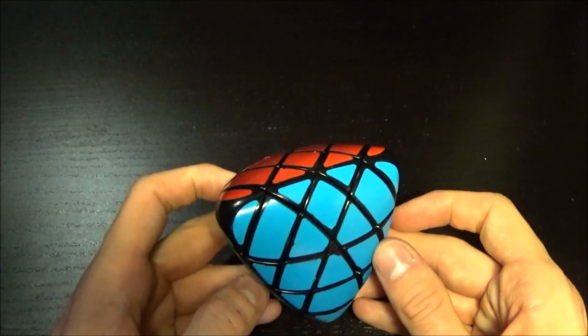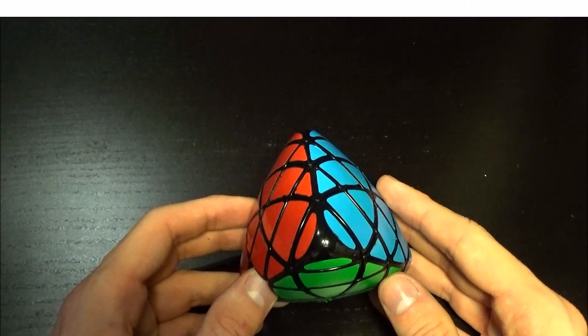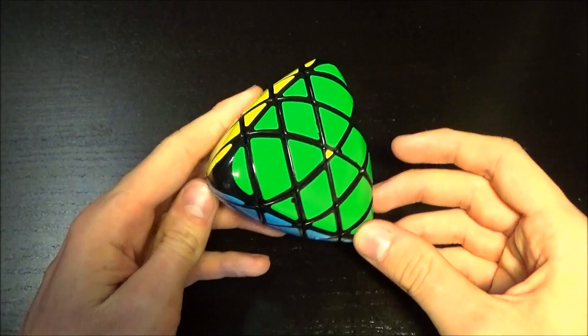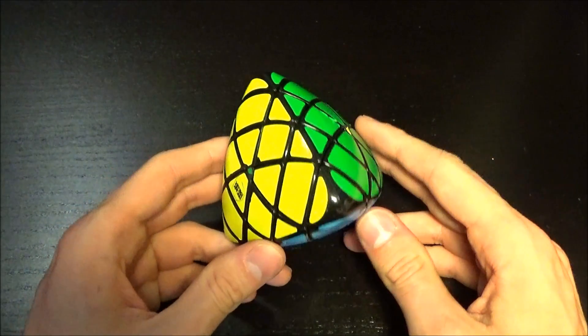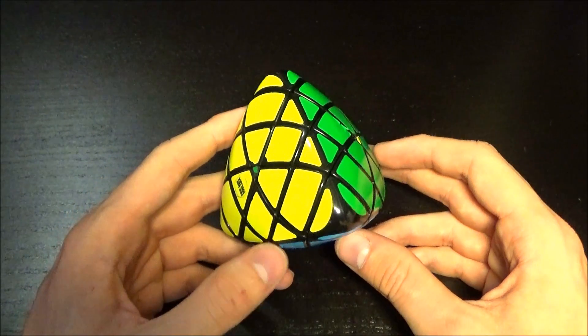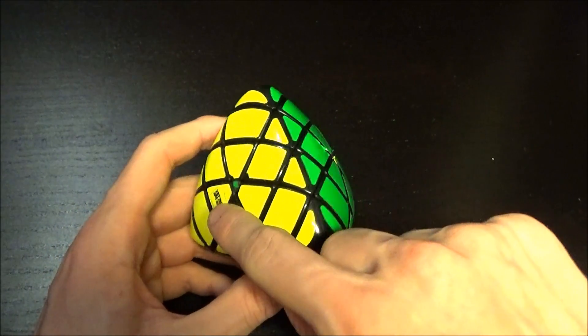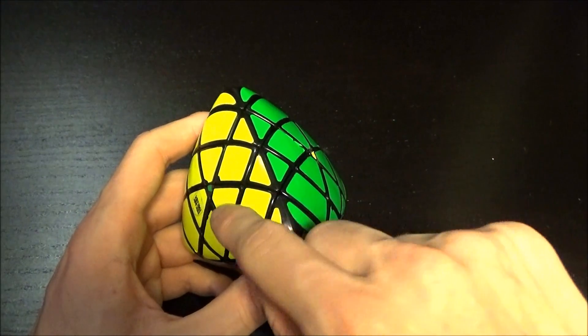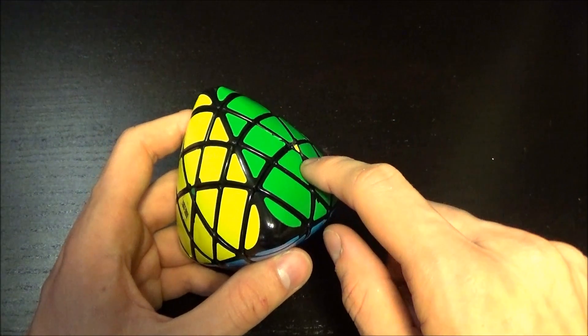Okay, now to the PLL algorithm. Okay, this is the PLL Parity. In this parity you can actually have different cases. This is the case where you have to switch two corners on the opposite sides.